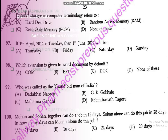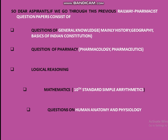Looking through this previous railway question paper, you will see it consists of questions covering general knowledge — mainly history, geography, and basics of the Indian Constitution — then pharmacy-related questions on pharmacology and pharmaceutics, then logical reasoning, and sometimes mathematics at the 10th standard level, as well as questions on human anatomy and physiology. We expect a similar pattern this time as well.